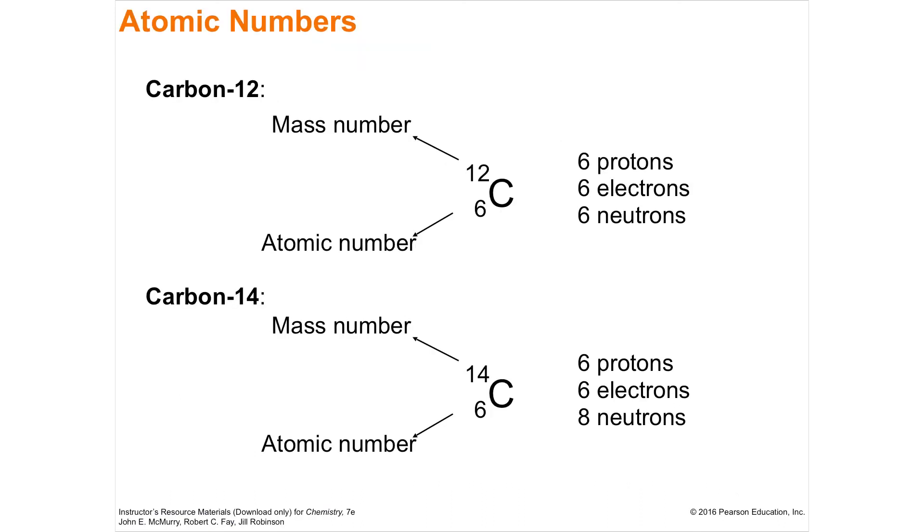So here's a couple examples. Carbon-12, and you name it by its mass number. So carbon-12, because it's carbon, it's going to have six protons. So it has a six in the lower case, 12 in the top. Carbon-14 is six in the six because it's carbon. And then 14 in the top.